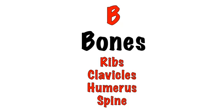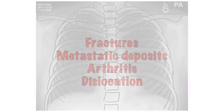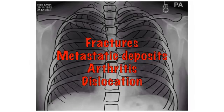B. Bones. Look at the ribs, clavicles, proximal end of the humerus and thoracic spine. Check for evidence of fractures or metastatic deposits and examine the shoulder joint for signs of arthritis or dislocation.